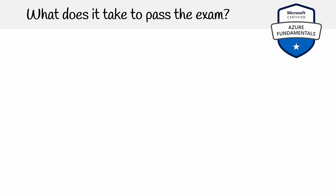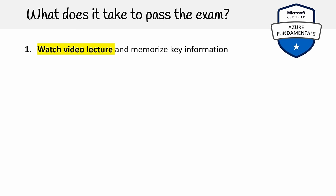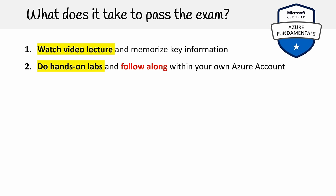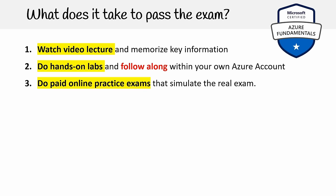What does it take to pass the exam? There are three components. First, watch the video lectures and memorize key information. Second, do hands-on labs and follow along with your own Azure account — we show you how to set up your own account in this course. Definitely do the labs, don't just watch, because that makes a huge difference. Third, do paid online practice exams that simulate the real exam. You can pass without paid practice exams at the foundational level, but it's much harder at associate and expert level.